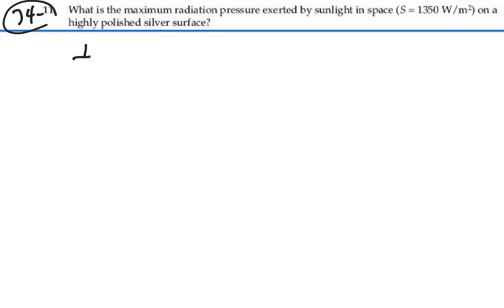So our intensity, I'll use I here, is 1350 watts per meter squared. Now we know for a highly polished silver surface we're going to have total reflection.